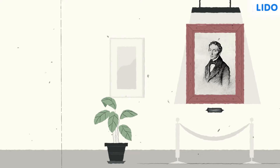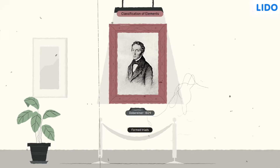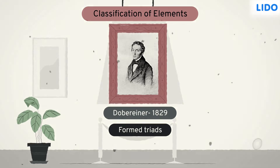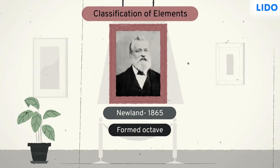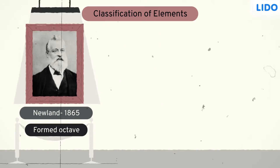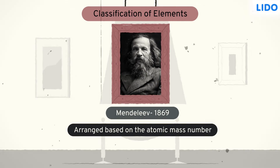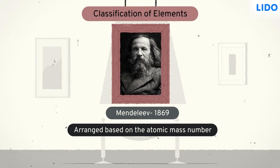Many scientists were working on finding the periodicity of elements and gave different bases for arranging and classifying the elements. But all failed and could not properly classify the newly discovered elements in the periodic table.